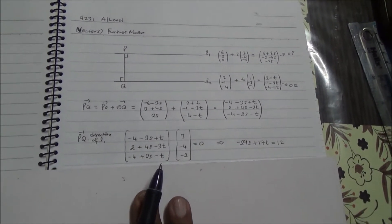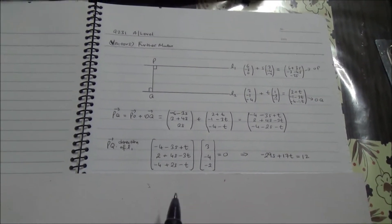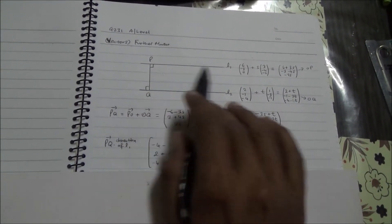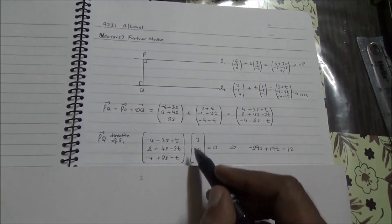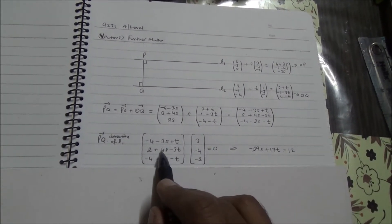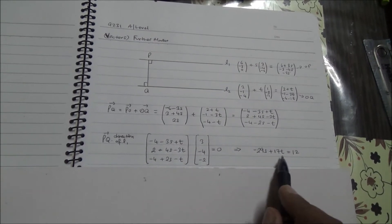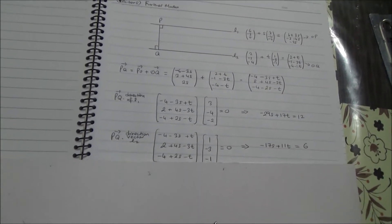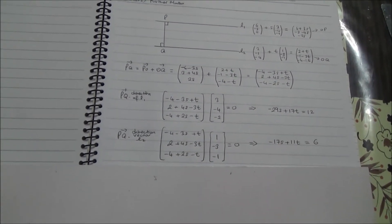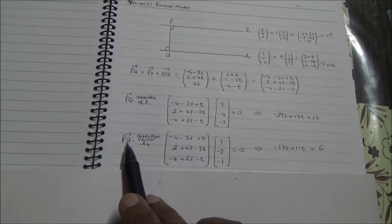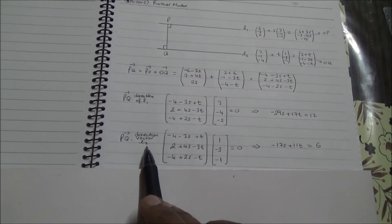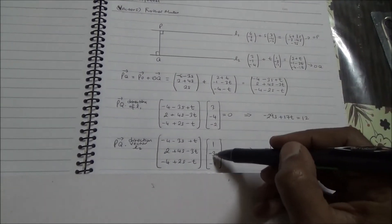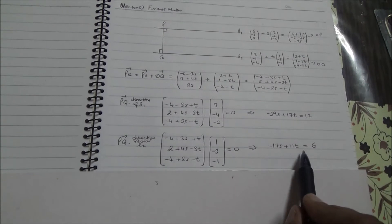The first dot product is PQ dot with the direction vector of line L1, which is (3, minus 4, minus 2). When you dot product these two, you get the first equation. Similarly, PQ dot with the direction vector of L2, which is (1, minus 3, minus 1), gives you the second equation.